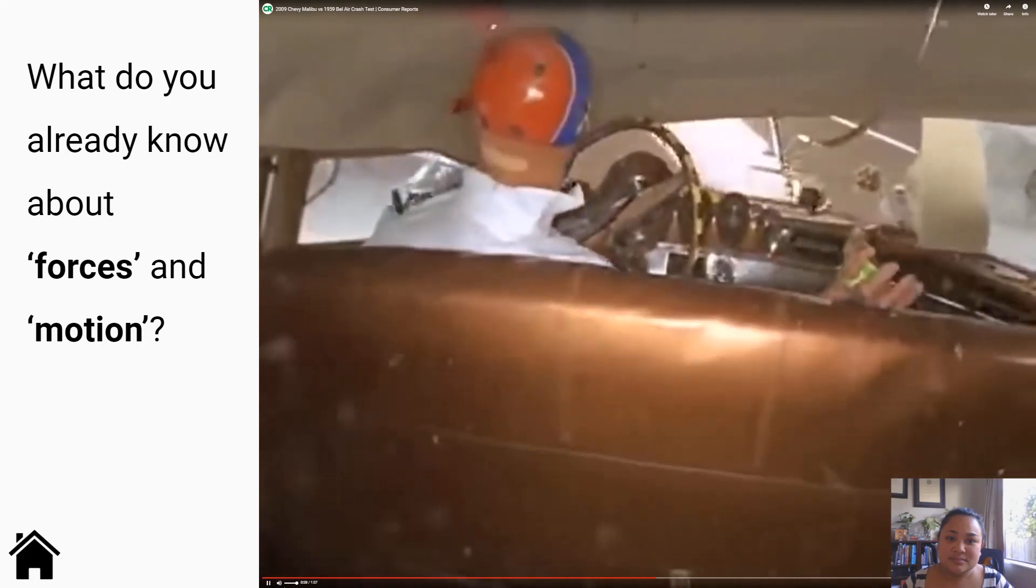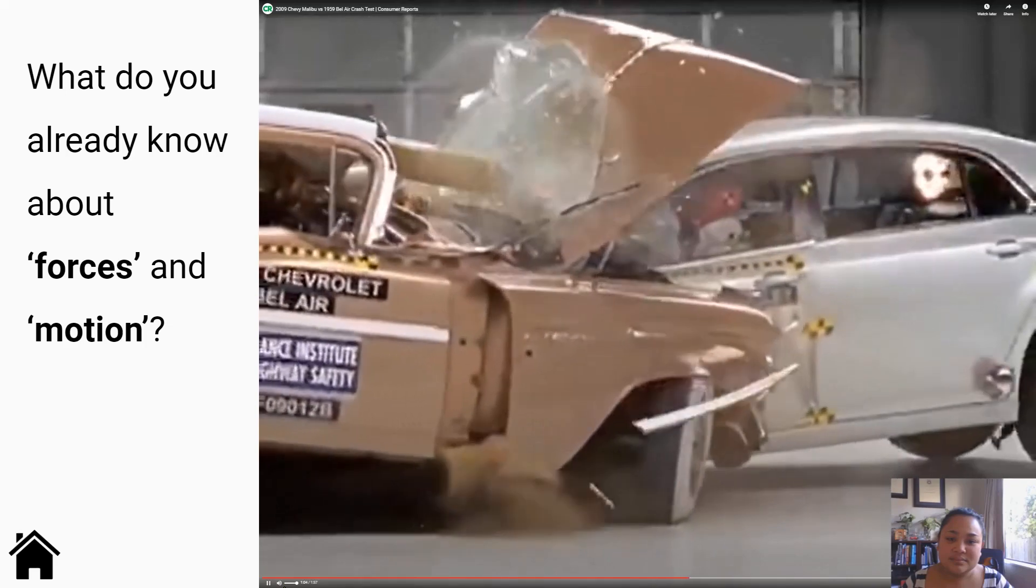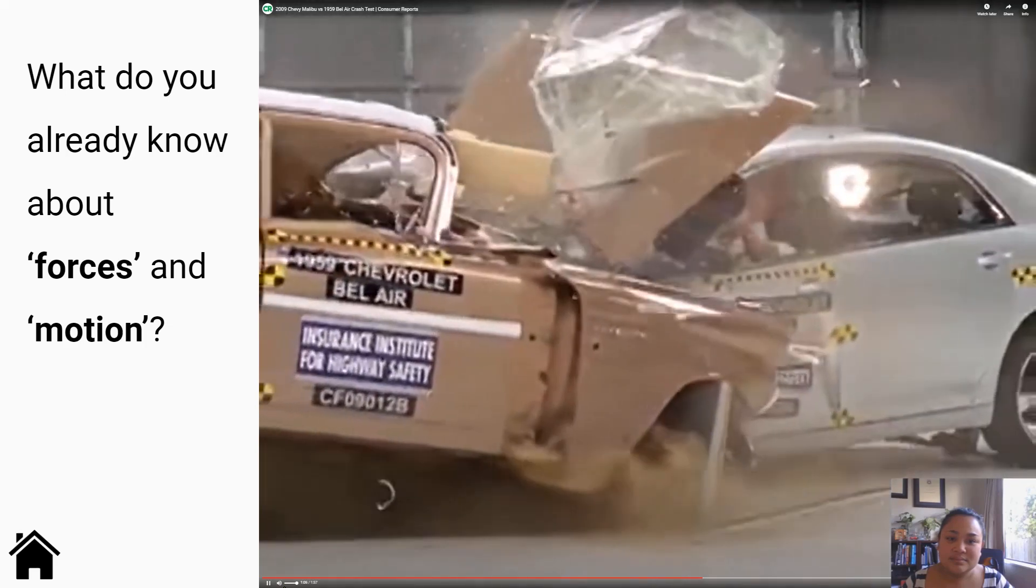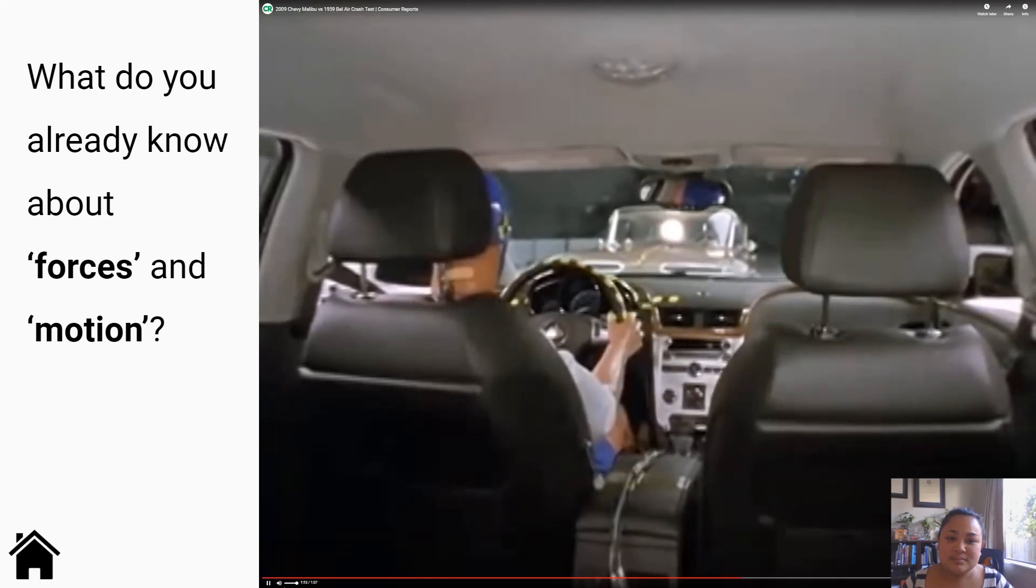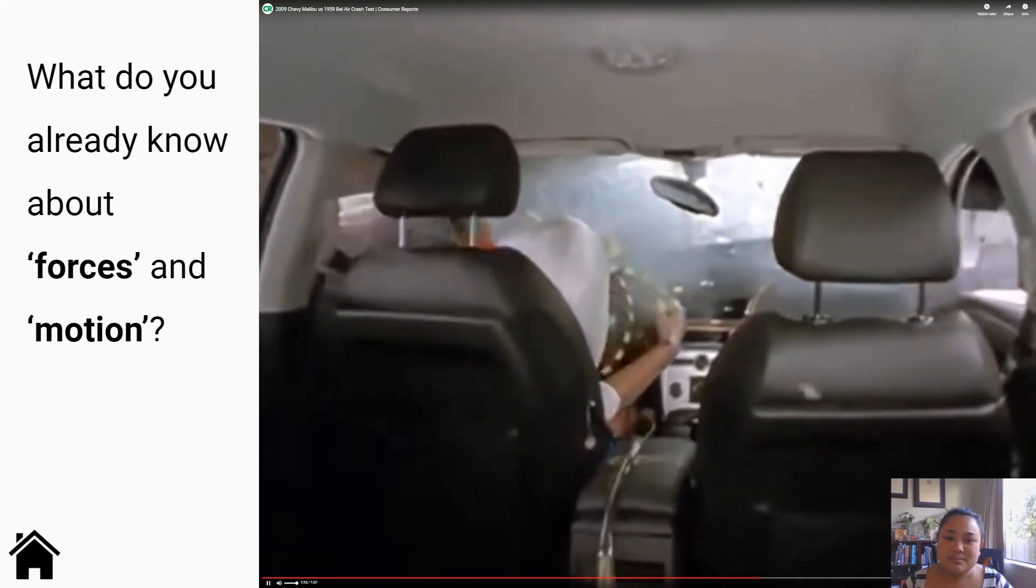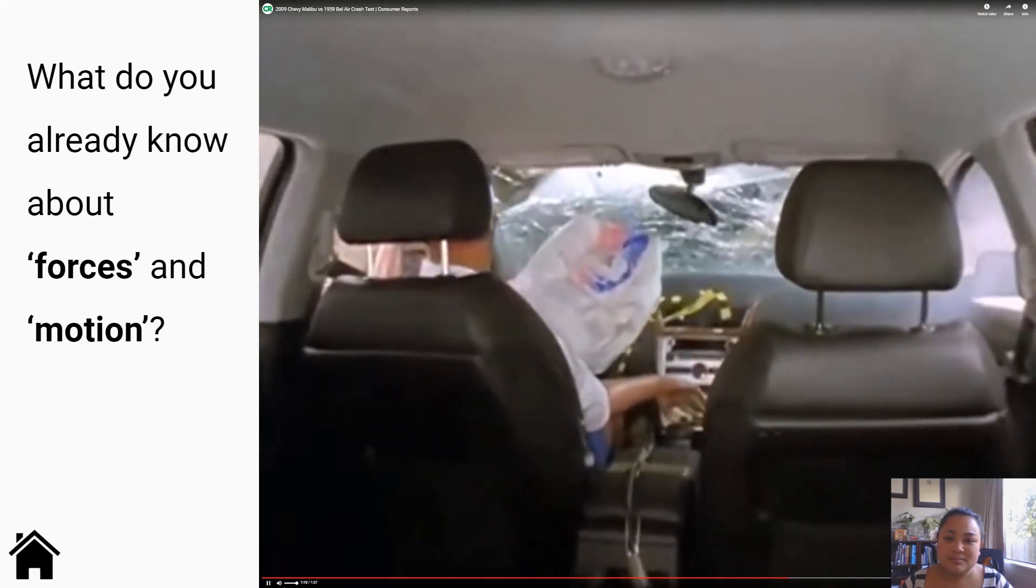As a result, injuries to the neck, chest and both legs would be likely. Consequently the Bel Air receives a poor rating across the board. On the other hand, the modern Malibu provides good protection, with the dummy movement being well controlled. Measures indicate a low risk to most body regions, though a foot injury would be possible.